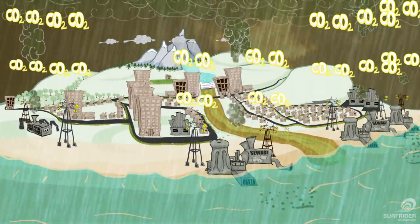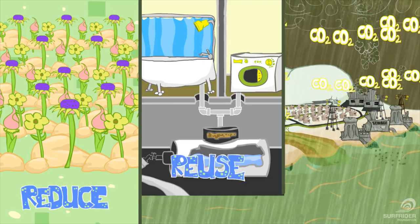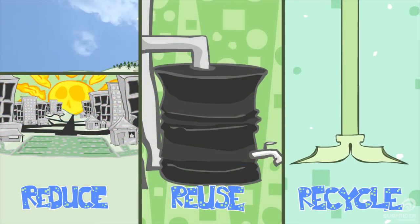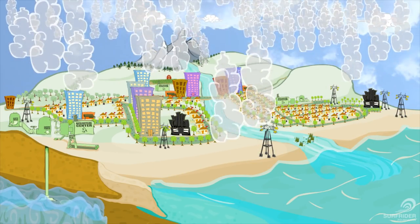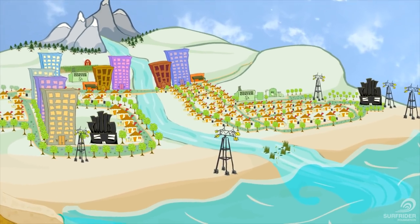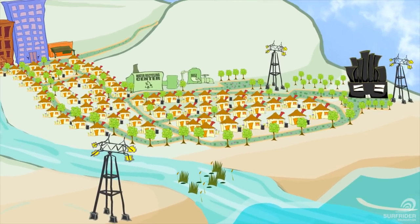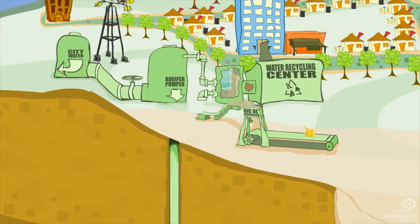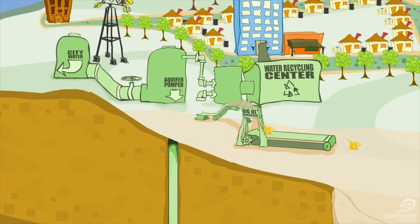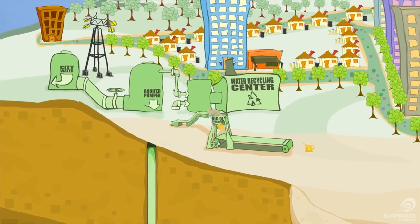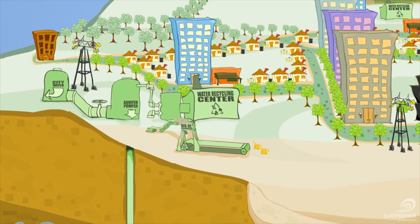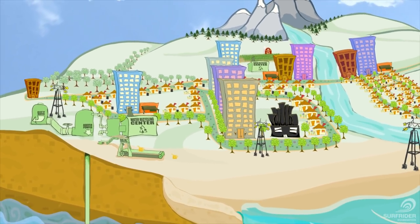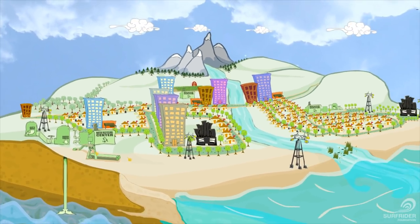Now is the time for a water management system that integrates the three R's — reduce, reuse, recycle — to address our water crisis and help reverse the damage caused by our current mismanaged system. This truly integrated water management program creates a holistic solution that incorporates ocean-friendly gardens and low-impact development to reduce our impact on the water supply, greywater systems to encourage reuse of our precious water resources, and potable reuse to recycle water we've already paid for and transported. We have the unique opportunity to transform water management with science and technology that is proven to work. Residents, businesses, and government agencies must all work together to seize this opportunity and change our water habits before it's too late.